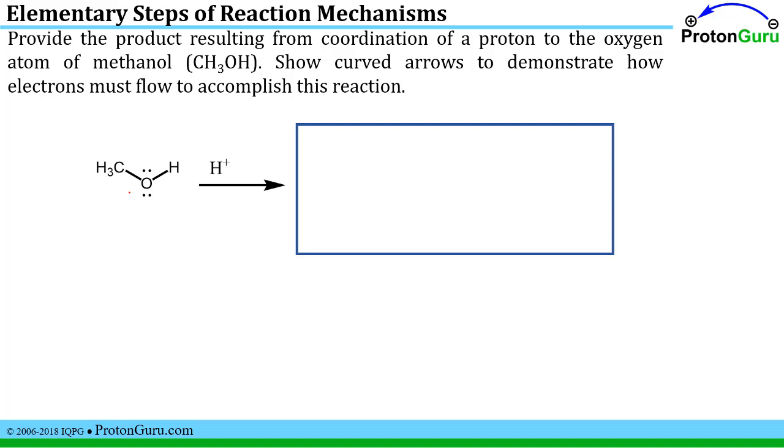Now we'll take a look at a different type of question. In this type of question, we're asking you to provide the product that would result from a certain type of step. Here we're asked to show the product of coordination of a proton to an oxygen atom of methanol. These two reagents shown here.